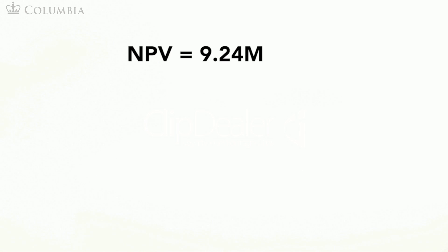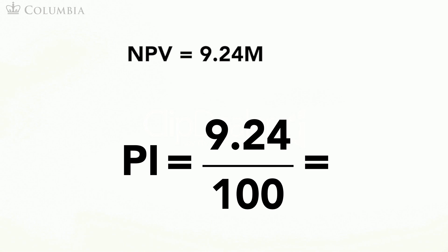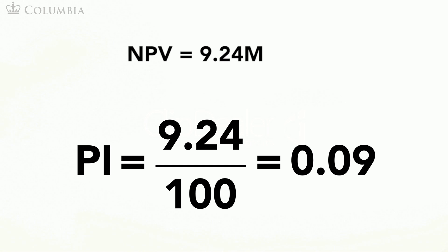As an illustration, let's go back to Jane's example. We computed the NPV of this project to be 9.24 million dollars and the initial investment to be 100 million. The profitability index of this project is therefore 0.09.